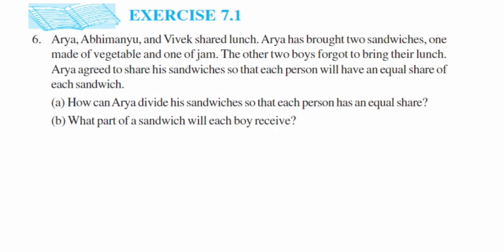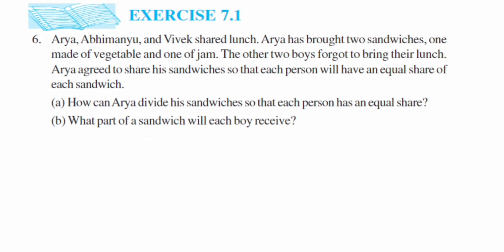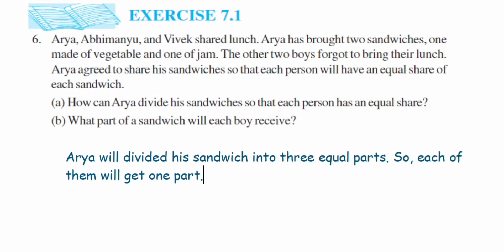We are going to answer the first question: how can Arya divide his sandwiches so that each person gets an equal share? Since there are three people — Arya, Abhimanyu and Vivek — he has to make three equal parts. So the answer is: Arya will divide his sandwiches into three equal parts so that each of them will get one part.